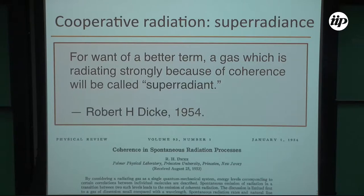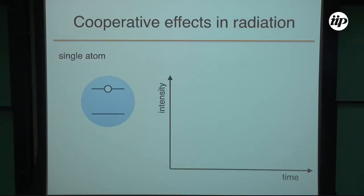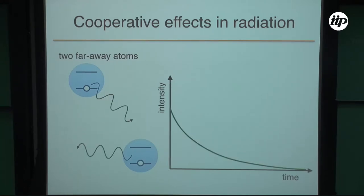The basic idea is as follows. If you have a single atom in the very simplest possible picture - single atom, two levels, starting in the excited state - and you let it decay spontaneously, and then you do this a million times, and you plot the intensity over time, you get an exponential decay. If you do the same thing with two atoms which are far away, intensity over time looks the same.